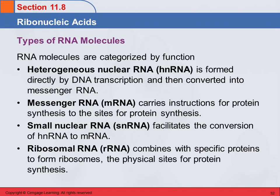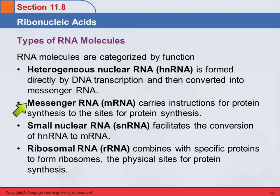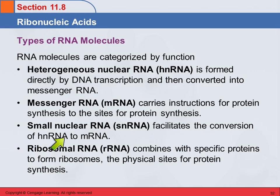There are several different types of RNA molecules, and they're categorized by function. What we refer to as HnRNA — HN stands for heterogeneous nuclear RNA — is formed directly by DNA transcription and then is converted into messenger RNA. Messenger RNA, abbreviated mRNA, carries the actual instructions for protein synthesis to the places where proteins are synthesized. Then we have small nuclear RNA, snRNA, which facilitates the conversion of HnRNA to mRNA.